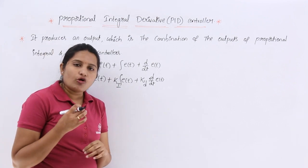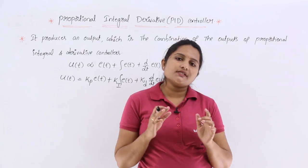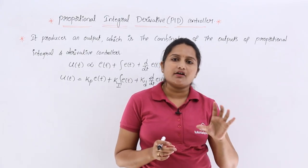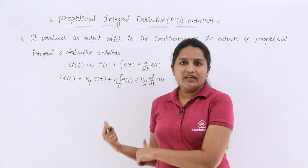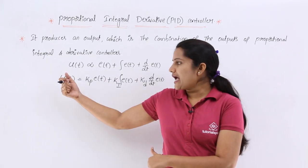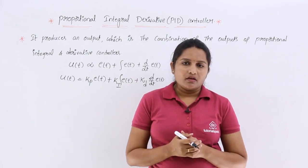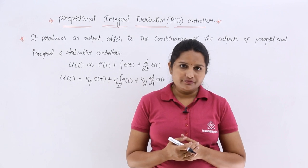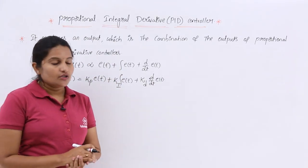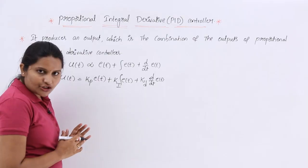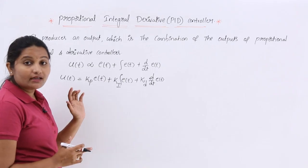Now we want to draw a block diagram of the control system with a PID controller. In control system block diagrams, any controller is represented using its transfer function. So we need the transfer function of the PID controller. We have the output and input in the time domain, but to get the transfer function we need to convert this time domain into the frequency domain or s-domain by taking the Laplace transform.